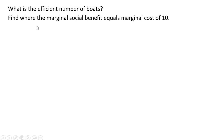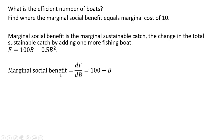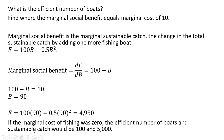What is the efficient number of boats? We're going to find where the marginal social benefit equals the marginal cost. The marginal social benefit is the marginal sustainable catch — the change in the total sustainable catch from adding one more fishing boat. Taking the derivative of the equation with respect to B gives our marginal social benefit. Setting that equal to the marginal cost and solving for B, we get 90 fishing boats, yielding a sustainable fish catch of 4,950 fish. If the marginal cost of fishing were zero, the efficient number of boats and the sustainable catch would be 100 and 5,000, but since there's a positive marginal cost, we get something a little less than 5,000.